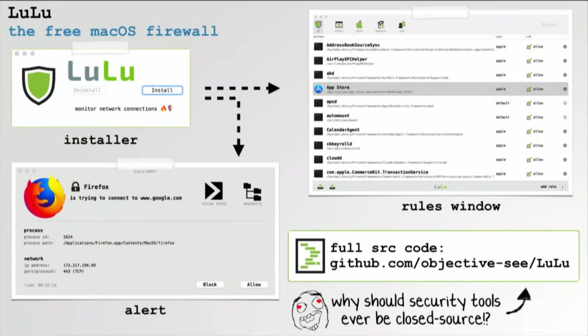That's basically all that's needed to create a comprehensive firewall for Mac OS. Putting this all together, we have LuLu — a free firewall. I don't think end users should have to pay for security products. The full source for the firewall is online on GitHub, and as of today you can download and install version 1.0.